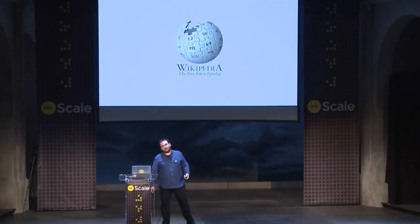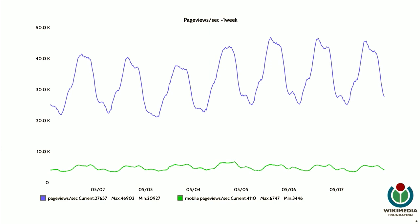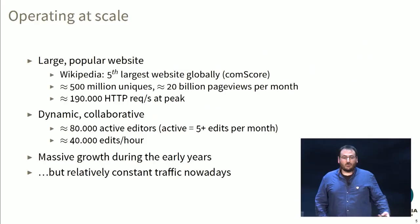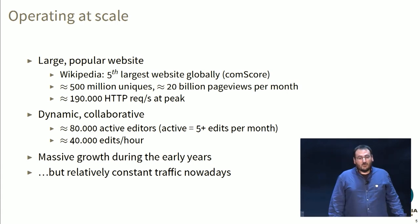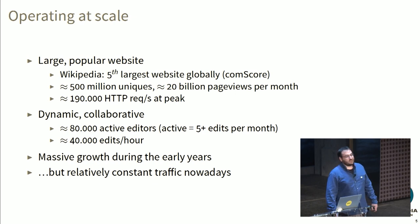I'm going to start with some basic design principles we have in mind whenever we design infrastructure. The first one is we operate at scale. This is a weekly graph of page views. You can see desktop is the blue line and mobile is the green line. It's fairly massive. We're a very large popular website. We have about 500 million unique users per month, accounting for 20 billion page views. At peak, we serve 190,000 HTTP requests per second.